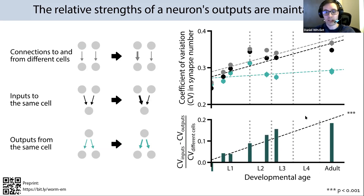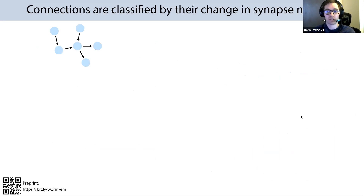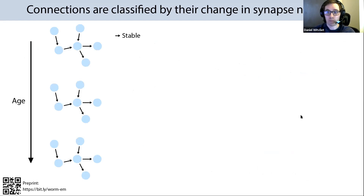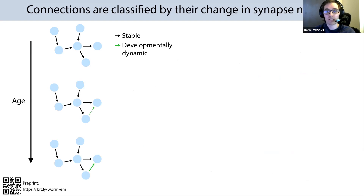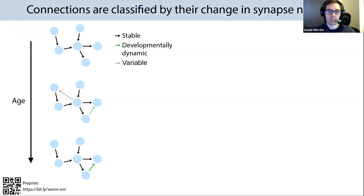One advantage of C. elegans is that we have identities of each cell, so we can ask which specific connections change across development. We classified connections by their stability across individuals and across development. Some connections are stable — present in every single animal. Some are developmentally dynamic — showing a significantly increasing or decreasing synapse number across maturation in a stereotyped manner, sometimes forming new connections or eliminating existing ones at specific life stages. Other connections are variable — exhibiting no consistent trend, not present in every animal, typically appearing in only one or two animals, not necessarily of the same ages.